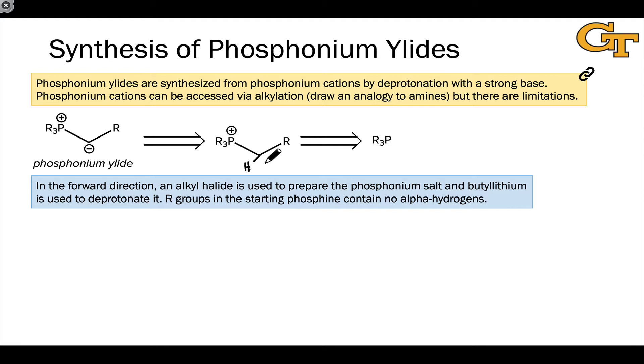We can create a phosphonium ylide by deprotonating a neutral phosphonium cation, and so we could say that a phosphonium ylide can be made from, that's the meaning of this double arrow here, a phosphonium cation, and in turn, the phosphonium cation can be made by alkylating a phosphine, the phosphorus analog of an amine.